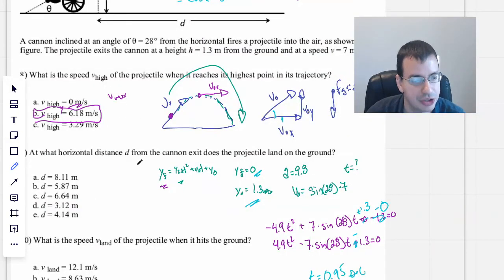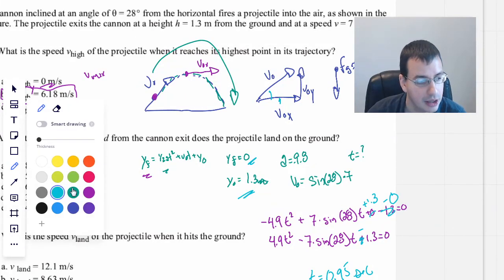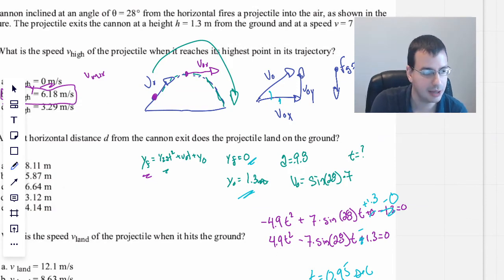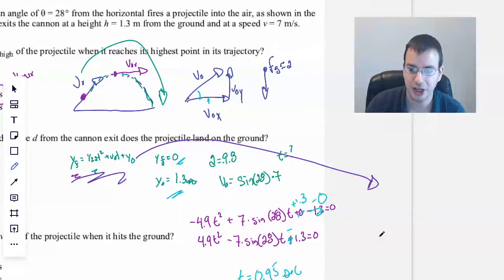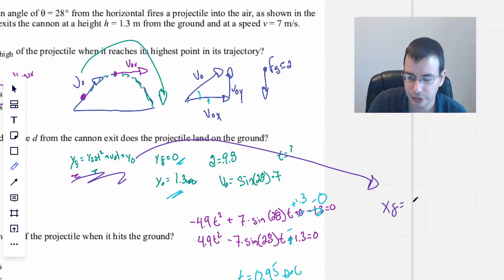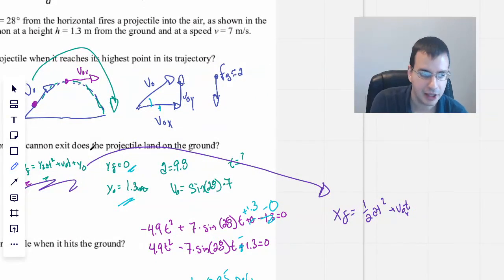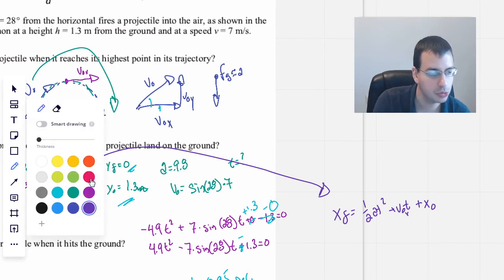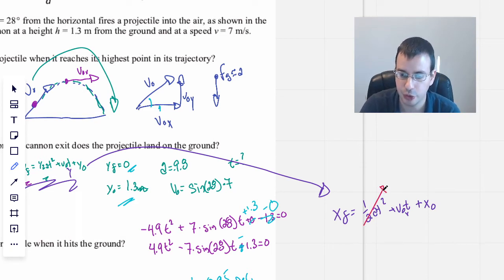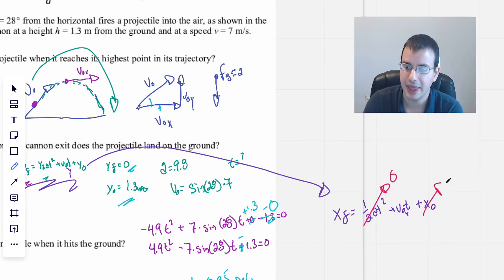And we solve for t equals 0.95 seconds. So now we'll take that. What horizontal distance from the cannon exit does the projectile land on the ground? And so now we have the time of flight right here. I'm going to take that time of flight and apply it to the x values. So we take this equation, come over here, we write it now in terms of x.